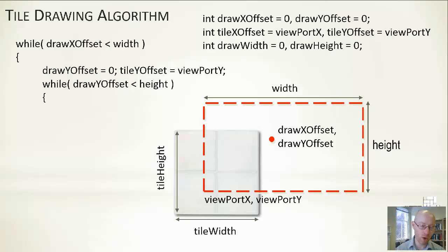We'll be drawing a whole column, moving across, whole column, moving across and repeating that until we've completely filled in the whole viewport based on its width and height. drawYOffset equals zero and tileYOffset are effectively reset for every time we draw a column. They're between the two while loops and this will just reset the respective tile offset and the viewport offset.